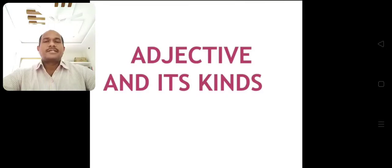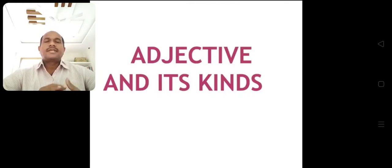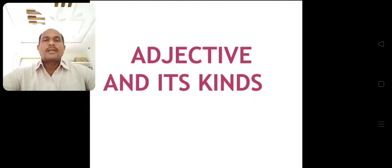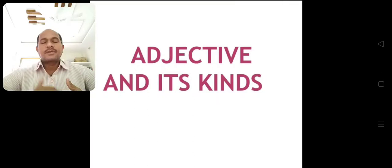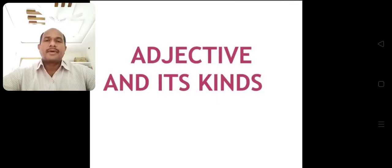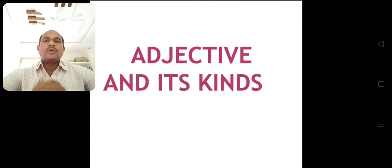What is an adjective? An adjective says something more about a noun or a pronoun. It can indicate a noun's color, quality and number. It is a defining word of a noun or a pronoun.